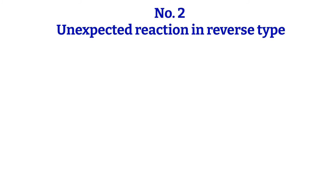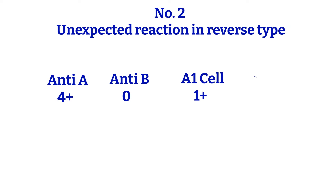Moving on to the next example — Number 2: unexpected reactions in the reverse blood type. For example, Anti-A 4+, Anti-B 0, A1 cell 1+, B cell 4+. Looking at these reactions, what comes to your mind? I'll give you a few minutes and then we will talk about it.